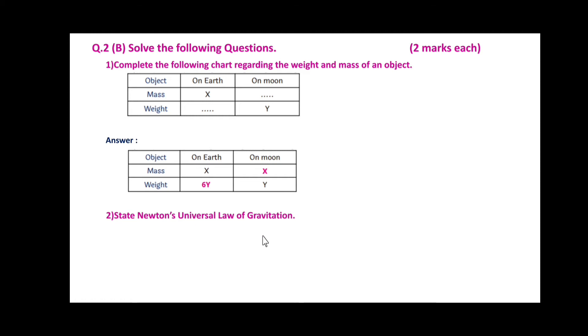State Newton's universal law of gravitation. Gravitational force between two bodies in the universe is directly proportional to the product of their masses and inversely proportional to the square of the distance between them.